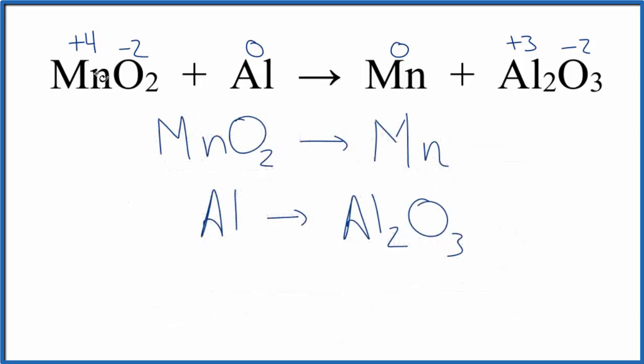The manganese goes from +4 to 0, so this number became smaller. This was reduced, it's gained electrons. And the aluminum has gained oxygen, so we're pretty sure that's oxidation. We go from 0 to +3, which means we've lost electrons, so the aluminum is oxidized.